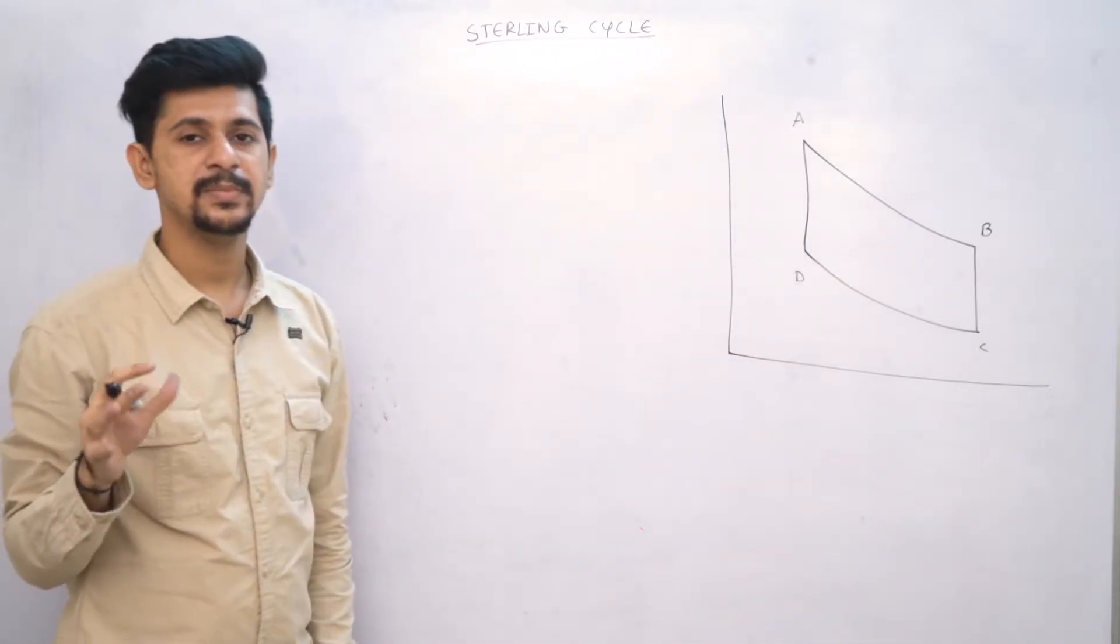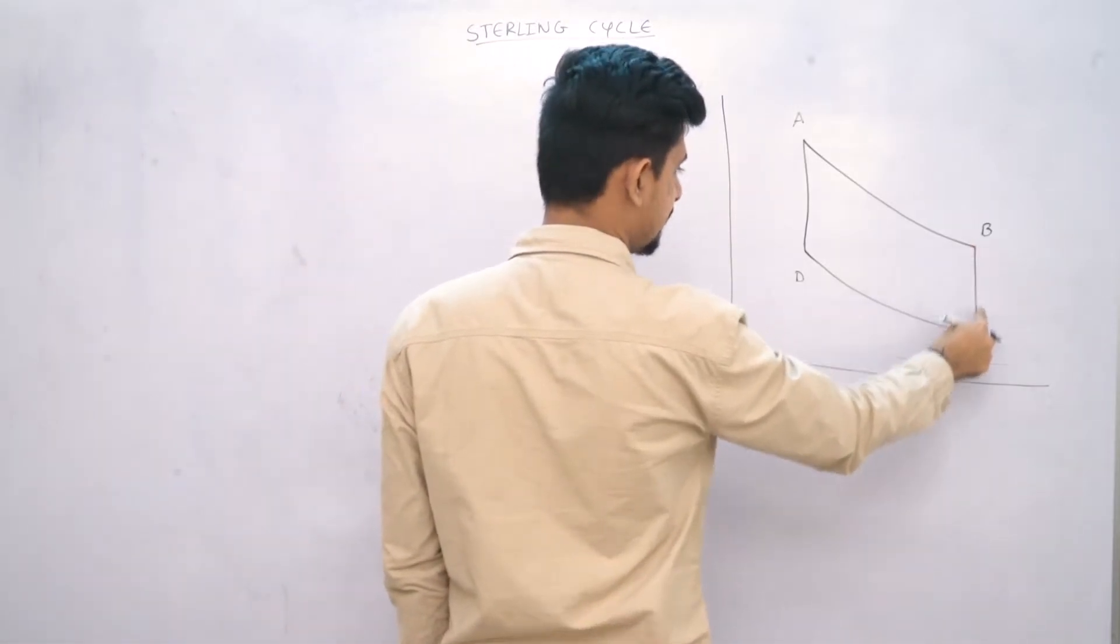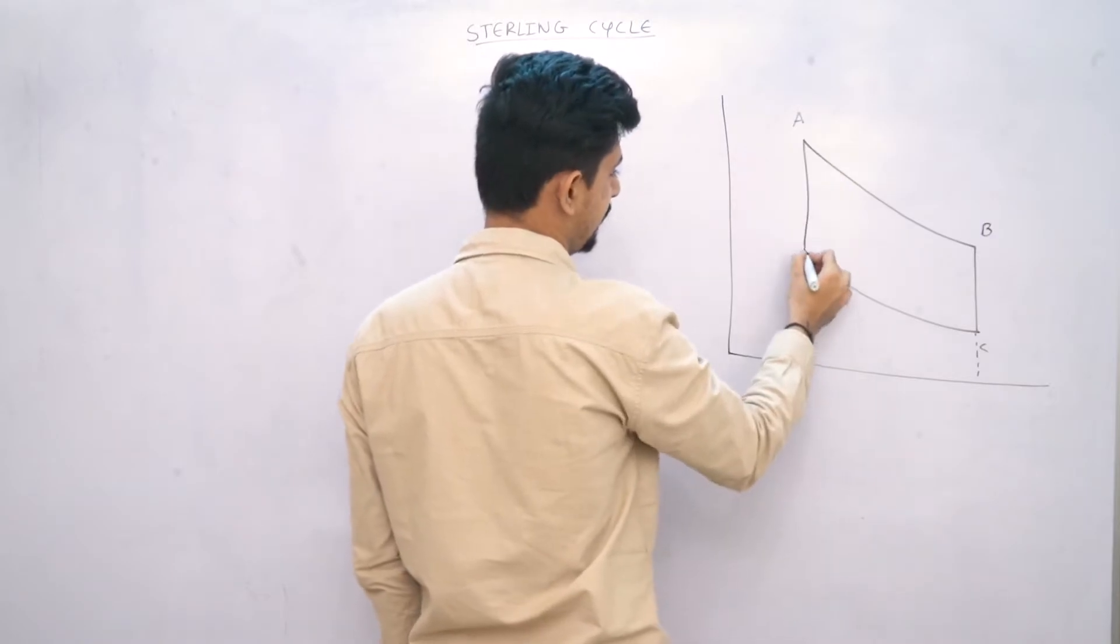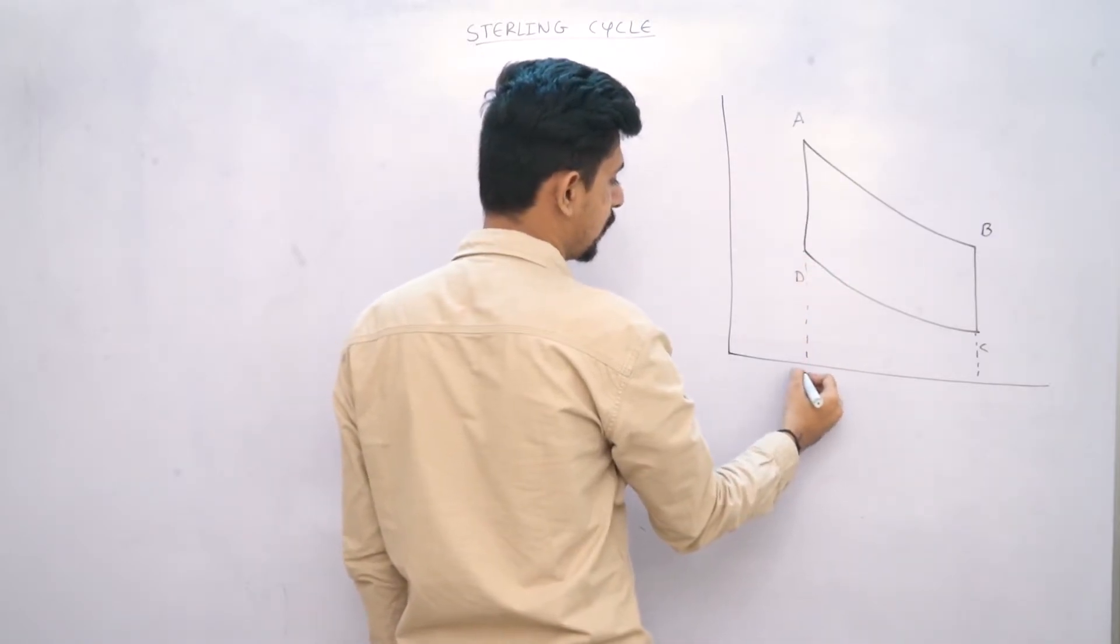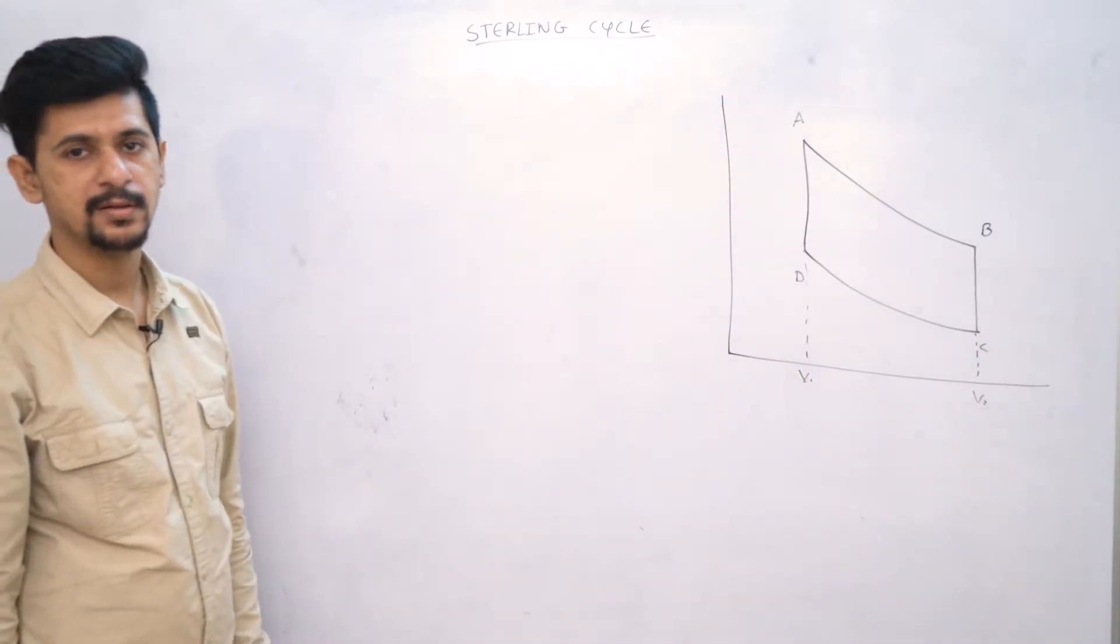You will see it's a little bit similar to Carnot cycle, but the only difference is this process B to C and D to A. This takes place at a constant volume. Whatever volume comes at B1, B2, it will remain the same in the process.